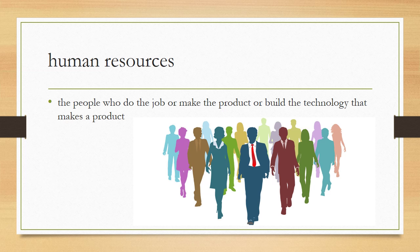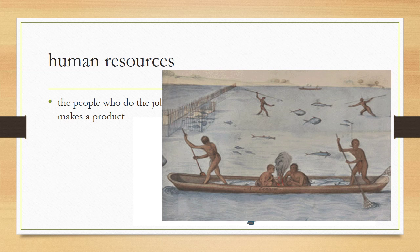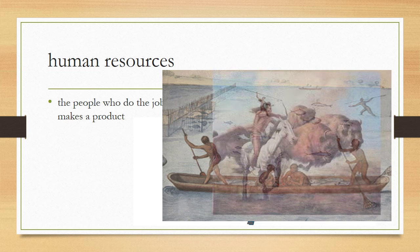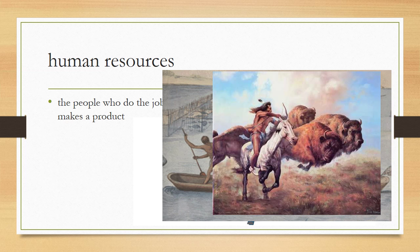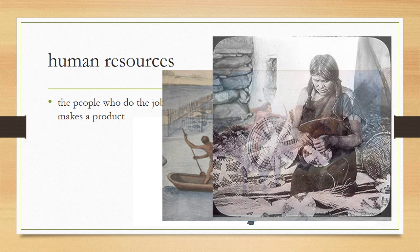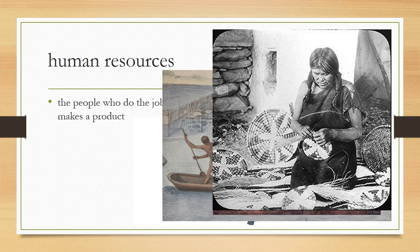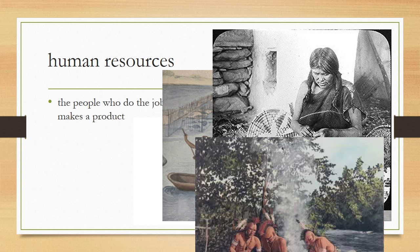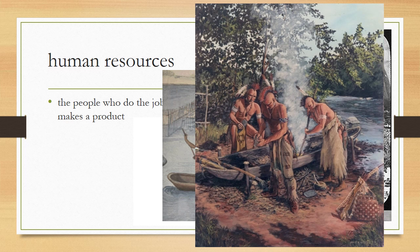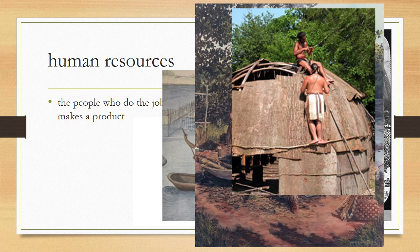Human resources are the people or humans who do the job, make the product, or build the technology that makes a product. When you think human resources, think people. In terms of Native Americans, the fishermen in this picture — those who might be spearfishing or with a net — are the human resources in this drawing. The hunter hunting the buffalo is the human resource in this picture. The woman weaving the basket is the human resource constructing this basket. The warriors burning the dugout canoe are the human resource as they are constructing their canoe. And the two natives working on building this longhouse are the human resources in this photograph.